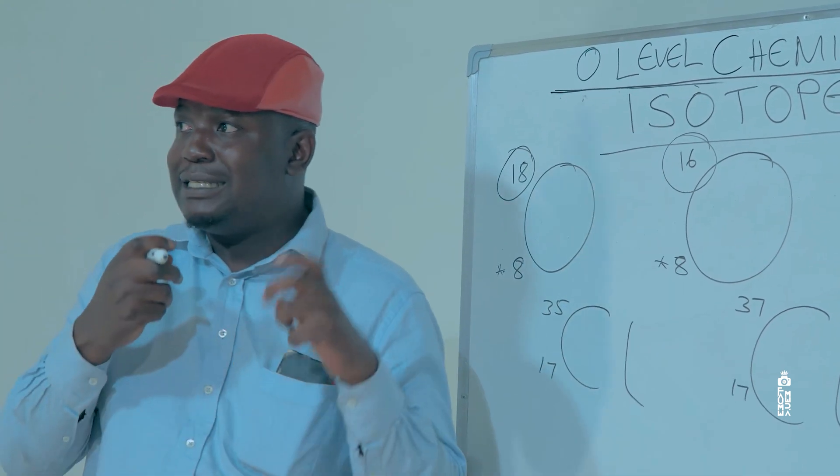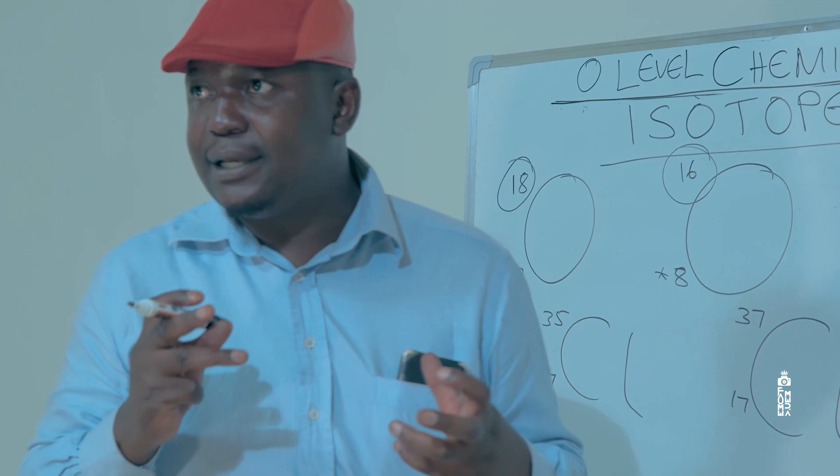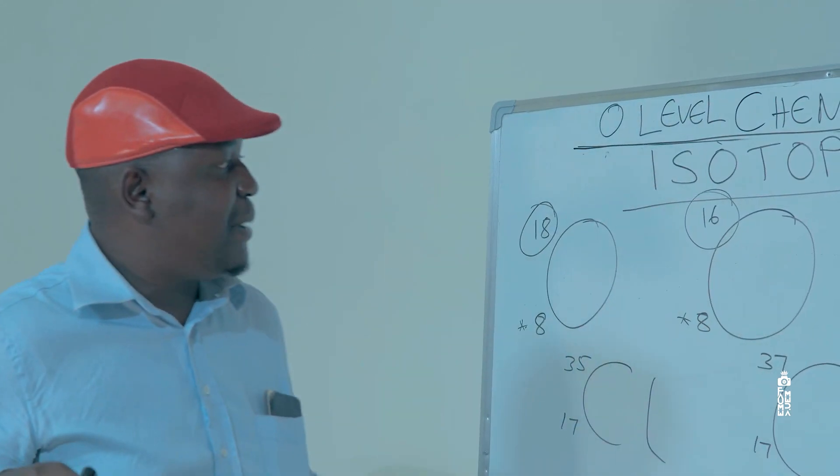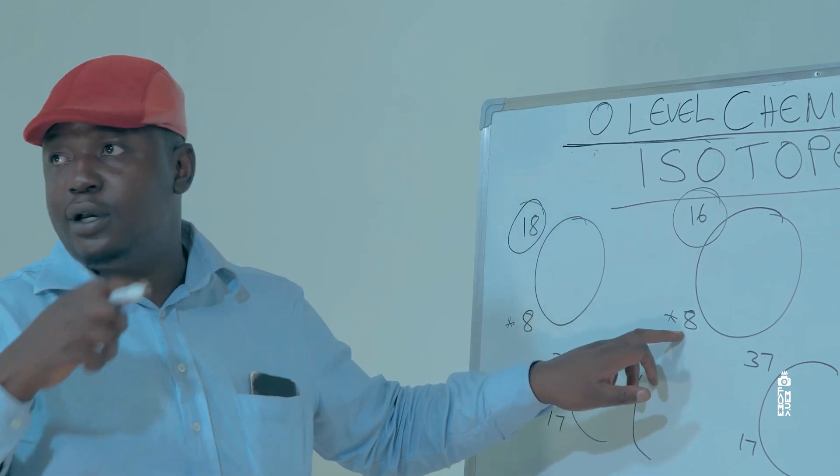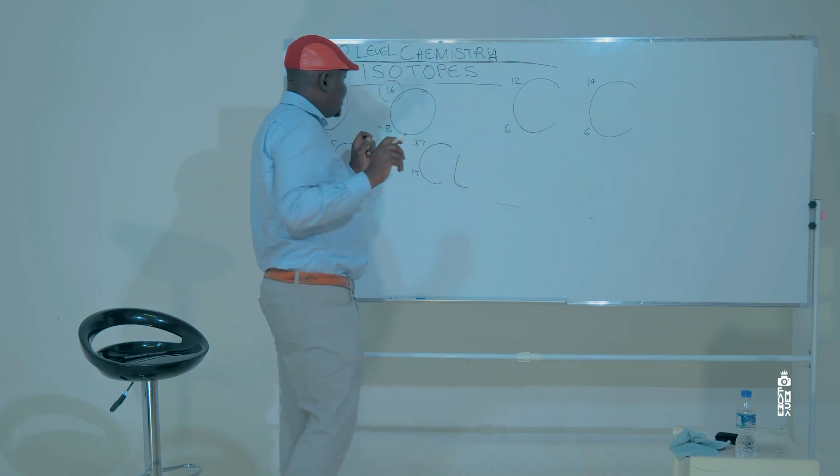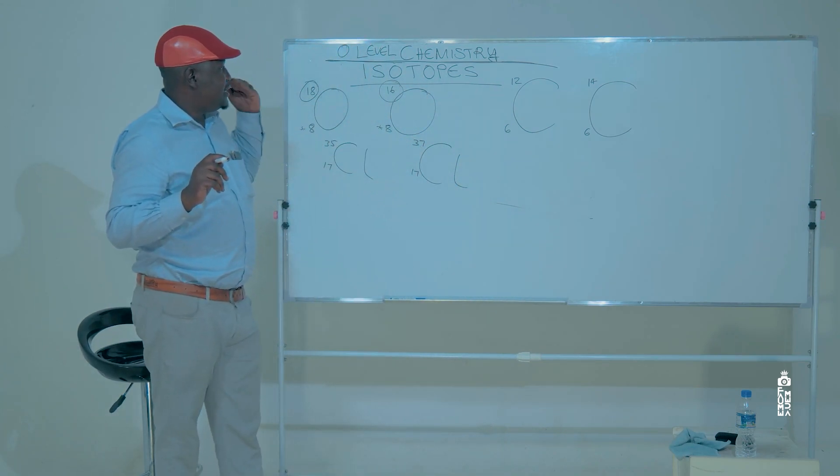The number of electrons is the same. The chemical reactions are the same, because chemical reactions are determined by the number of electrons. So, since these isotopes have got the same number of electrons, what it means is that their chemical reactions are the same.